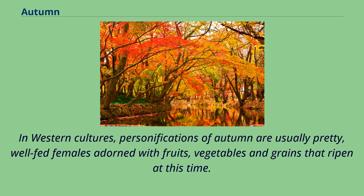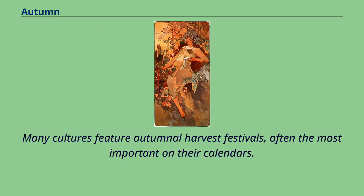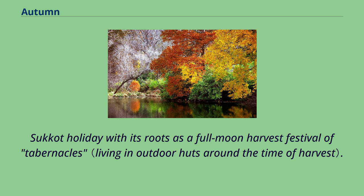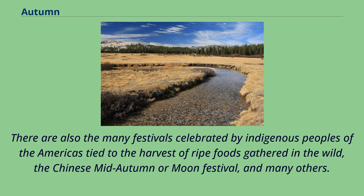In Western cultures, personifications of autumn are usually pretty, well-fed females adorned with fruits, vegetables, and grains that ripen at this time. Many cultures feature autumnal harvest festivals, often the most important on their calendars. Still extant echoes of these celebrations are found in the autumn Thanksgiving holiday of the United States and Canada, and the Jewish Sukkot holiday with its roots as a full-moon harvest festival of tabernacles.